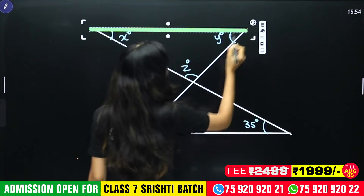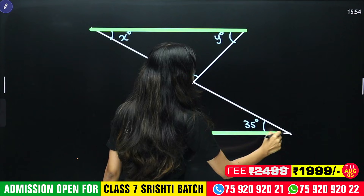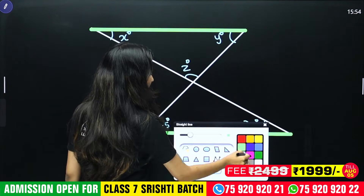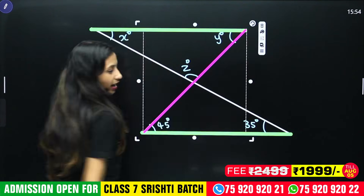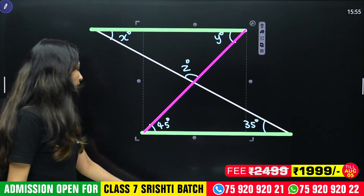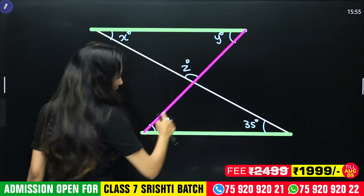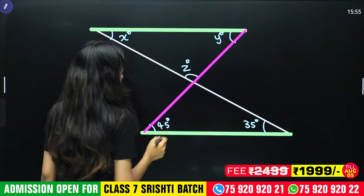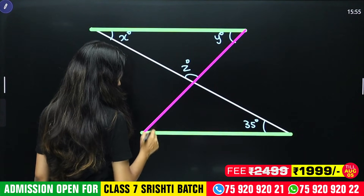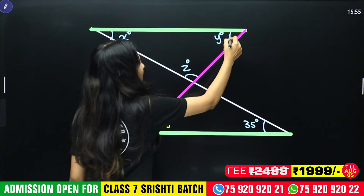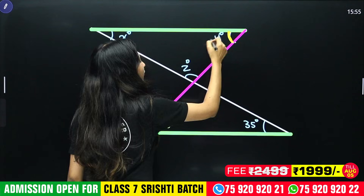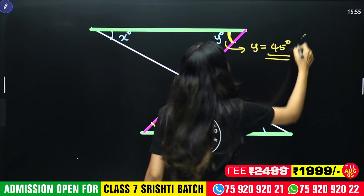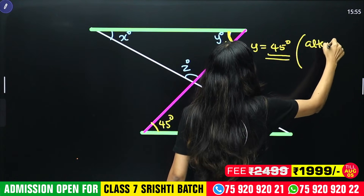This green line is parallel. If it is a parallel line, we have a pink color. If you have a Z-shape, this is a Z-shape. This one is 45 degrees. What is the reason? Is the reason alternate angle?